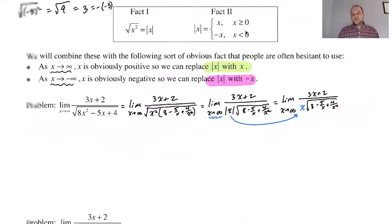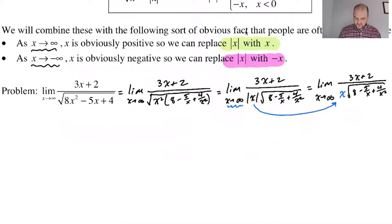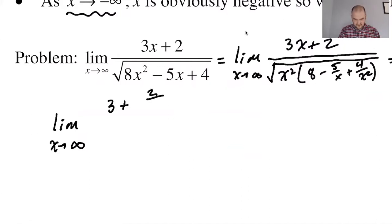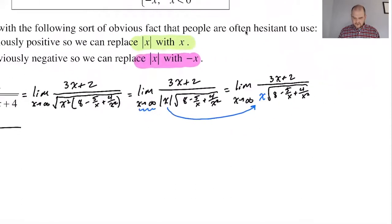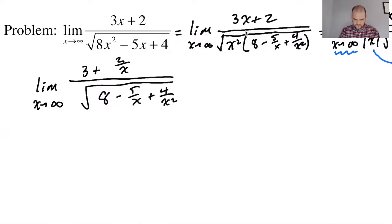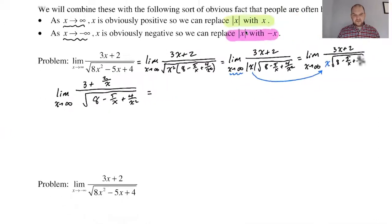Now I'm going to divide through by the highest power of x in the denominator, which is x to the first. The denominator is a product, so I get to choose: divide x by x or divide the radical by x. Obviously you want to divide x by x. So the numerator becomes 3 + 2/x, and the denominator becomes just the square root of (8 − 5/x + 4/x²).